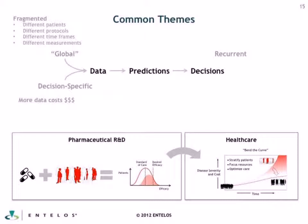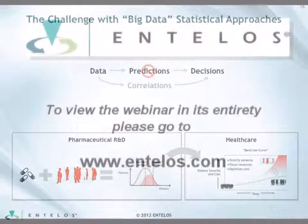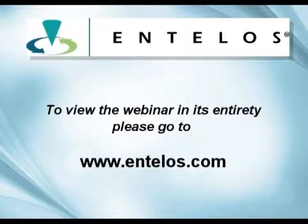One of the things we said at the outset of the talk was positioning this approach — hypothesis management — against the standard big data statistical approaches. One of the issues with statistical approaches is that the predictions are really driven by correlations seen in that global data and how they apply to the decision-specific data you're looking at.